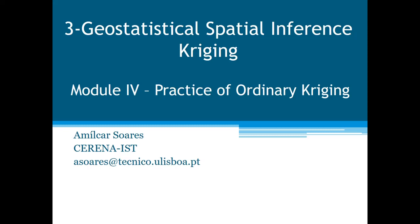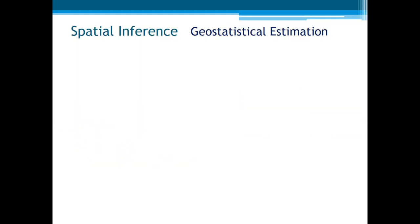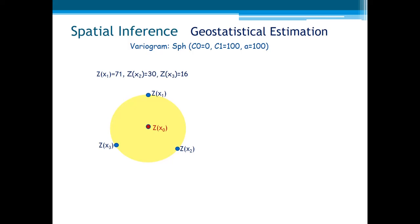In this last lecture, we are going to see some important issues of the practice of the ordinary Kriging estimator. Let us step through this very simple example. We have here three sample values of the variable z at locations x1, x2, and x3, and we wish to estimate the value at location x0 based on those three values. Suppose we have an isotropic variogram model, a spherical model, with no nugget, with this sill and this range.